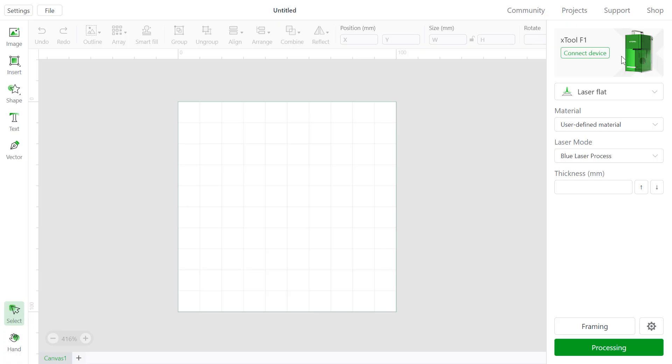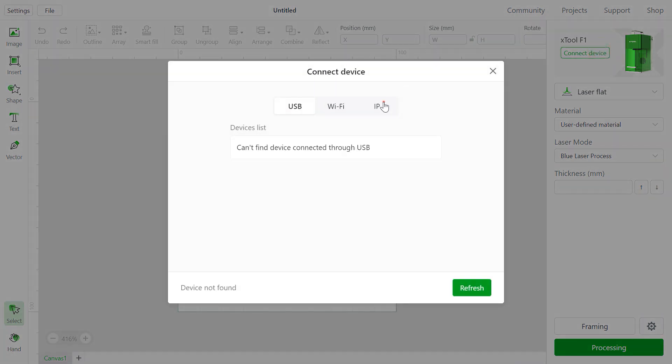First, let's open our Xtool Creative Space software, and now let's connect F1. Today we're going to use the IP function, and of course you can use the USB and the Wi-Fi function as well.